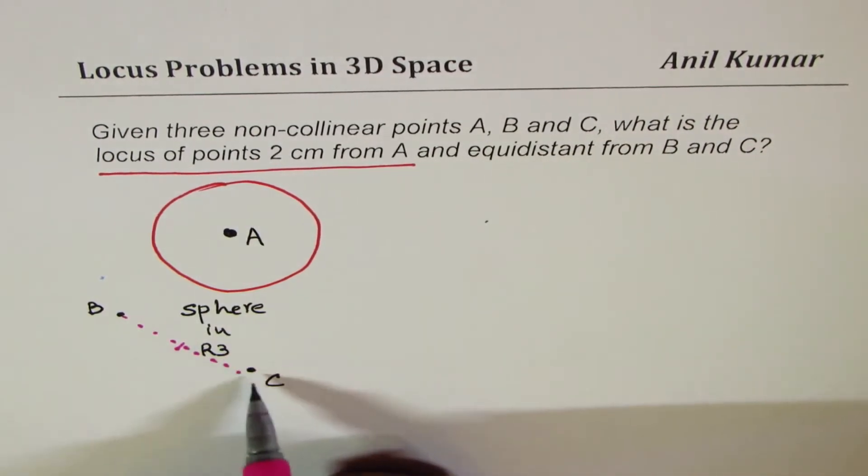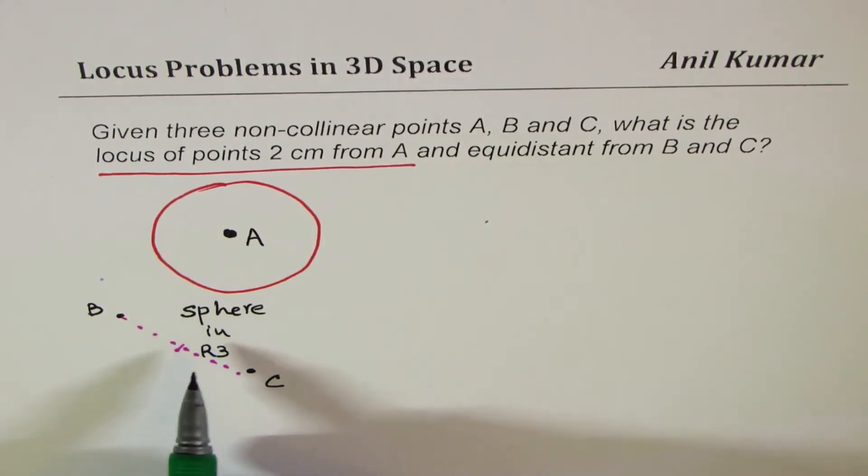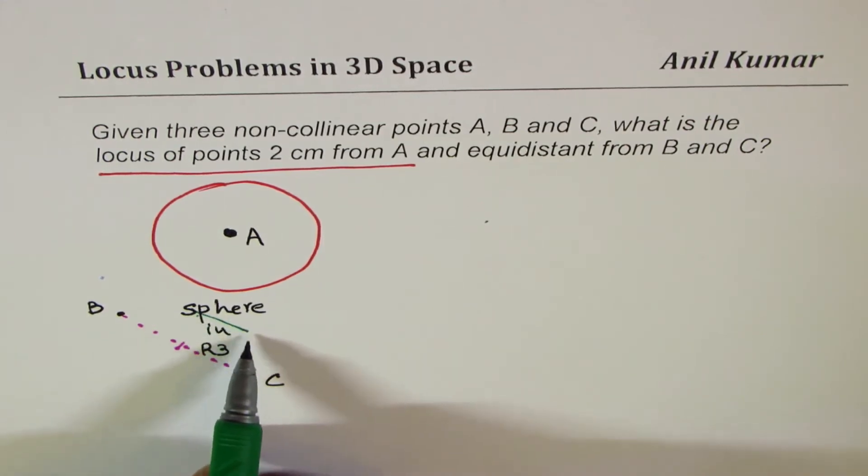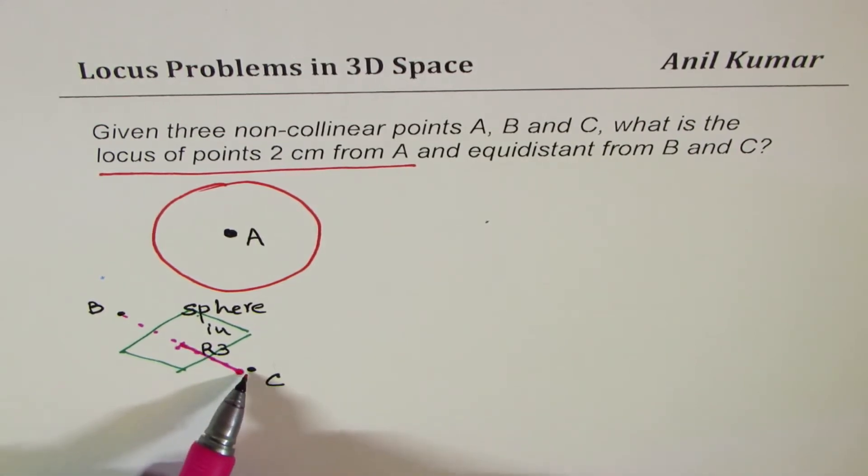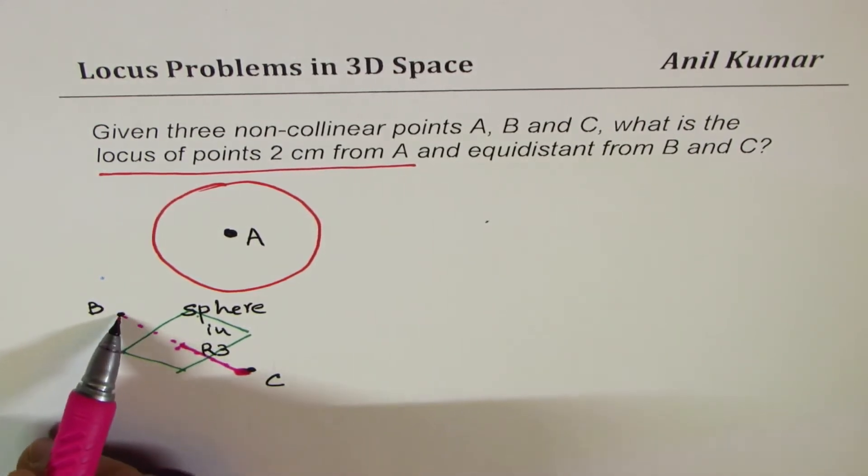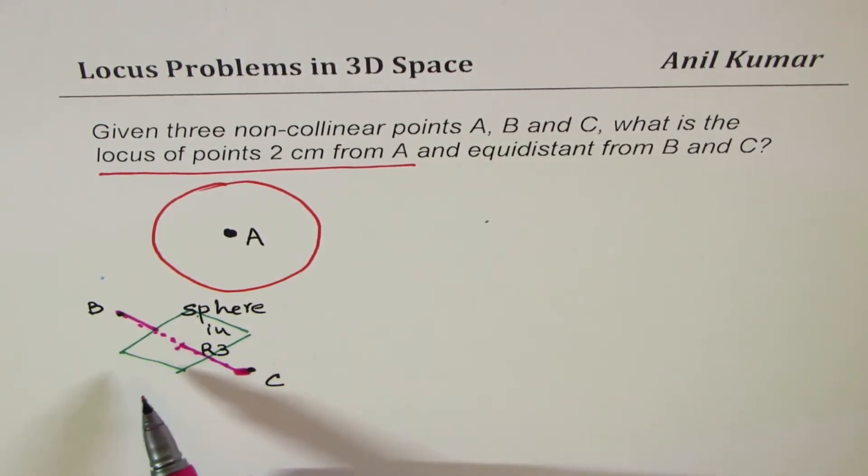So, any plane which goes through this midpoint will be equidistant from B, C, correct? So, which I could actually sketch as something like this. So, that becomes a plane which goes through the midpoint, right? So, which I could sketch kind of like this. I mean, this is C for us, okay? Do you see that? So, that plane.